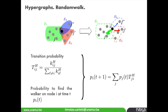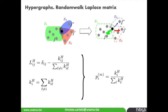From the matrix K_ij, you can compute the transition probability T_ij by normalizing. Given P_i(t), the probability to find the walker at node i at time t, you can compute the random walk as usual. Once you have this, you can compute the Laplacian matrix L_ij, which is the identity minus the transition probabilities, where k_i^H is the hyperdegree of node i.